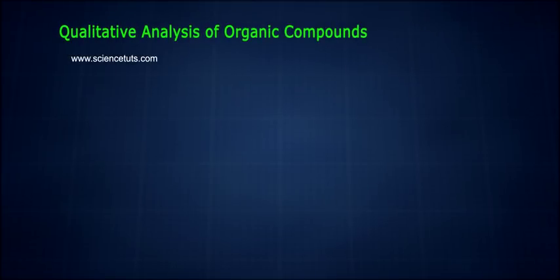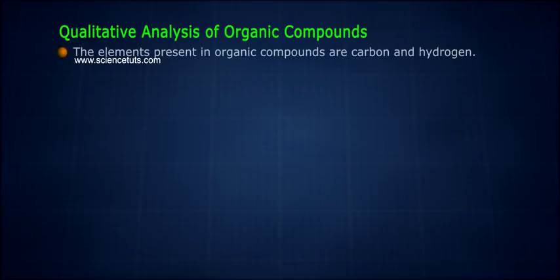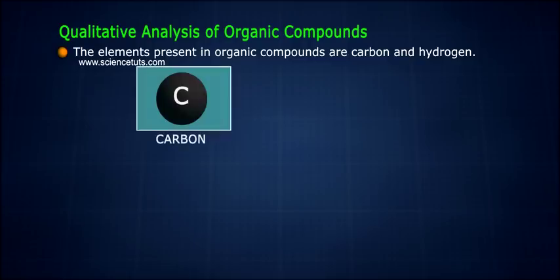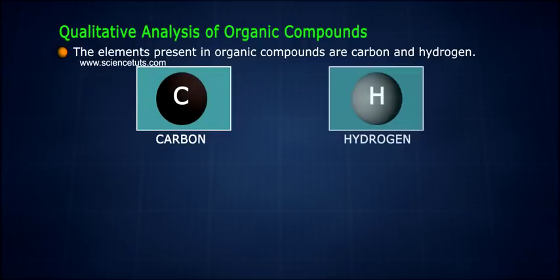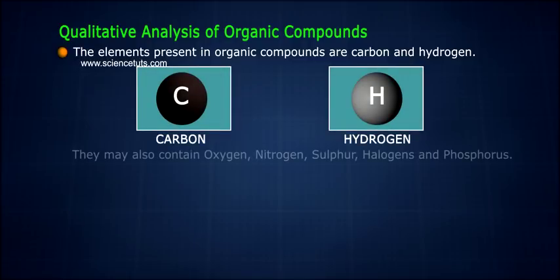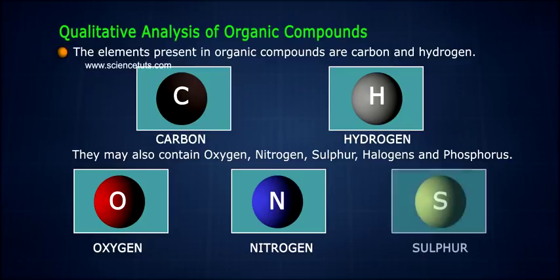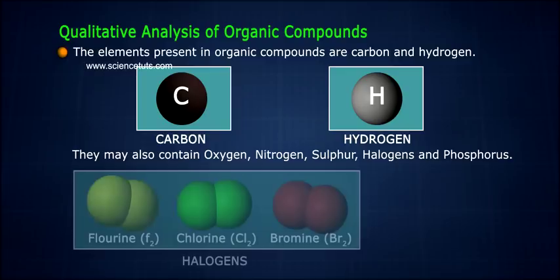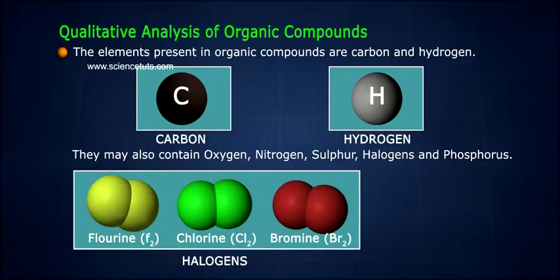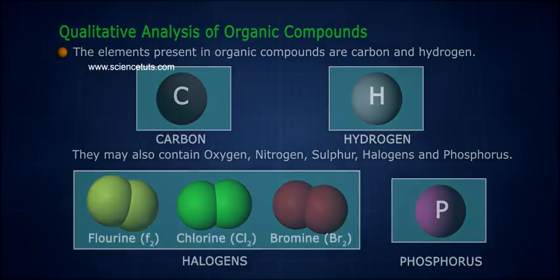Qualitative Analysis of Organic Compounds. The elements present in organic compounds are carbon and hydrogen. They may also contain oxygen, nitrogen, sulfur, halogens, and phosphorus.